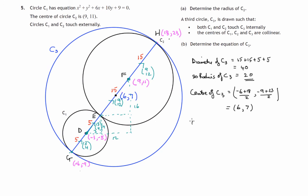So finally the equation of C3 is x minus the x-coordinate of the center squared plus y minus the y-coordinate of the center squared equals the radius squared. So 20 squared, that's 400. So that's the equation of C3.